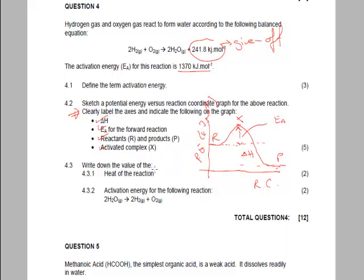Now it says write down the value of the heat of the reaction. Well, we know that this here is activation energy, which is 1370, and we know that it gave off 241.8 kilojoules per mole. Okay. So therefore, what is the heat of the reaction? It is minus 241.8 kilojoules per mole. So that is how much energy was given off.